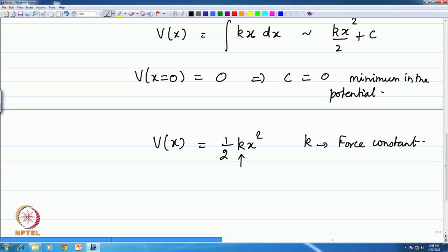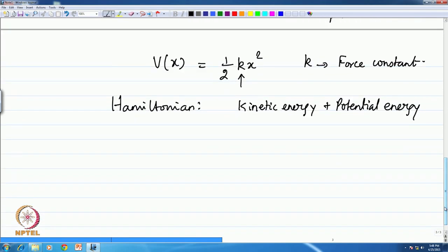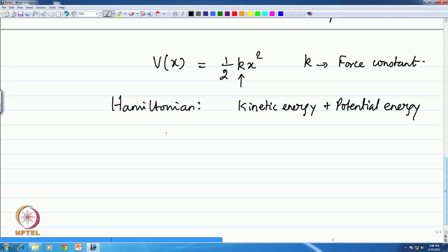The dimension of k: k x² is energy, so it is very clear what k should be. And the Hamiltonian, if you have to write for the harmonic oscillator, is obviously the kinetic energy plus the potential energy of the harmonic oscillator.